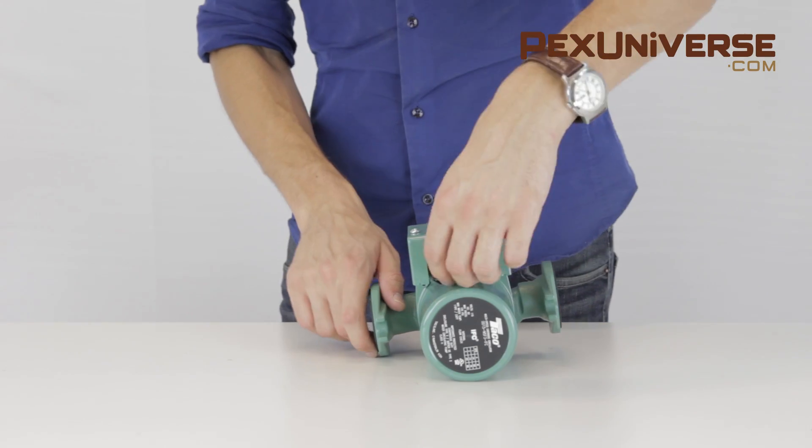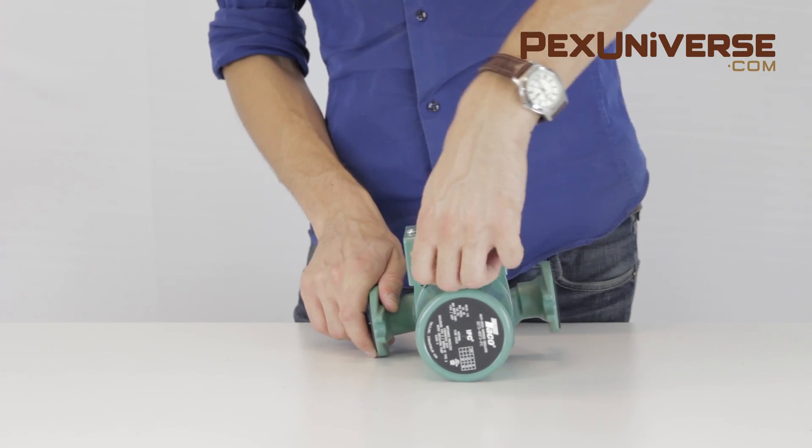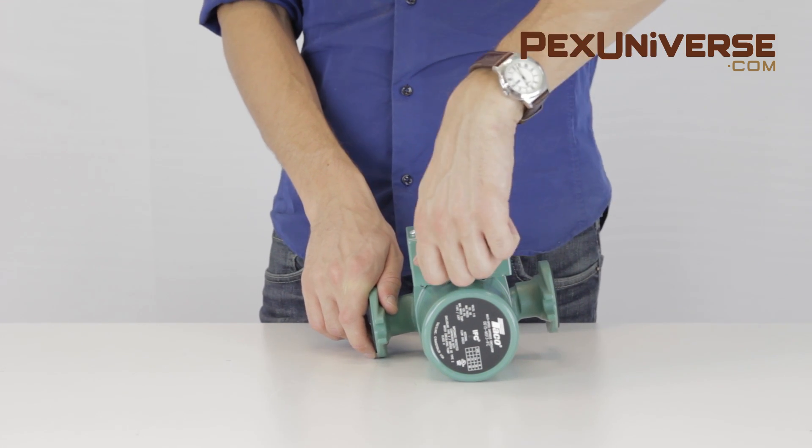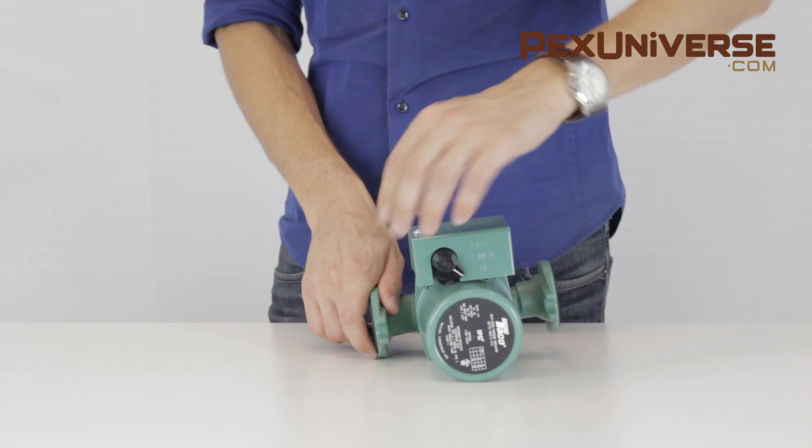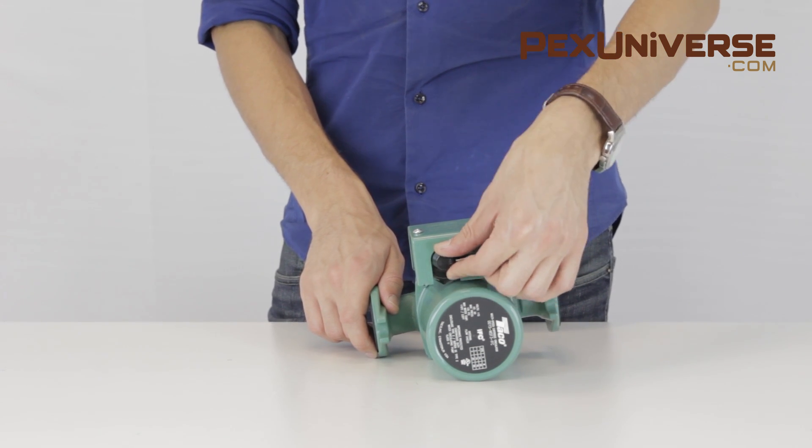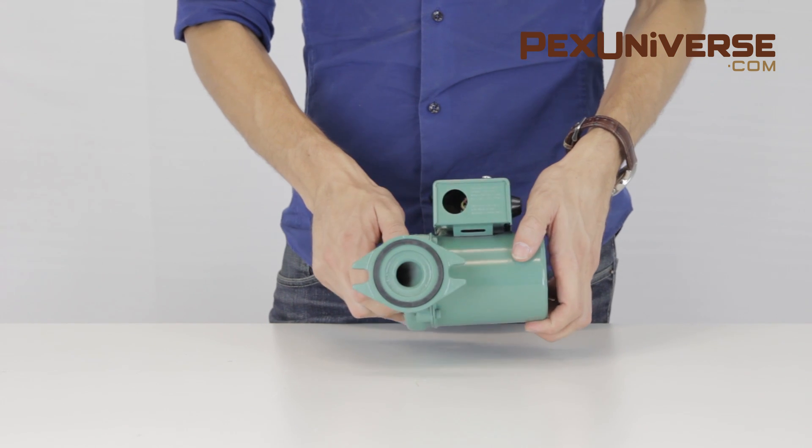The 3-Speed Switching Capability of the 0015 MSF3-1 IFC Tayco Circulator Pump provides a convenient way to match a wide combination of pex or copper tube diameters and length of runs.